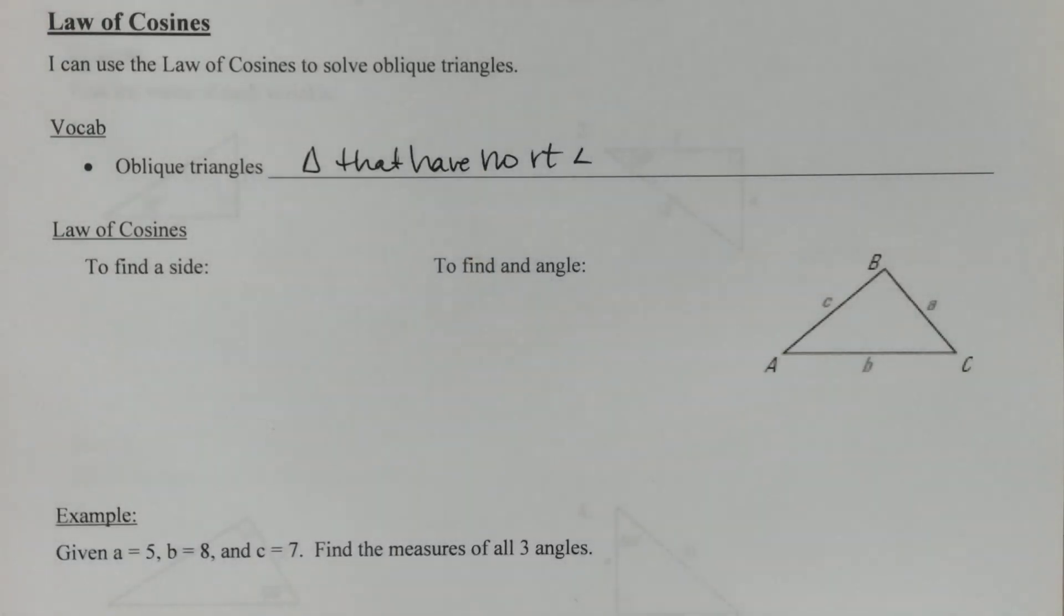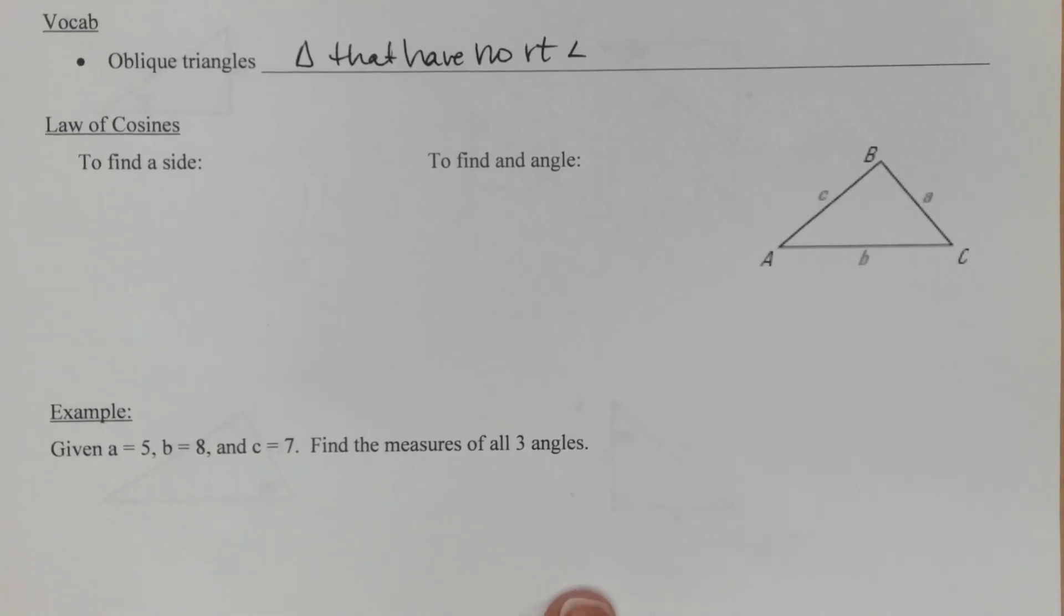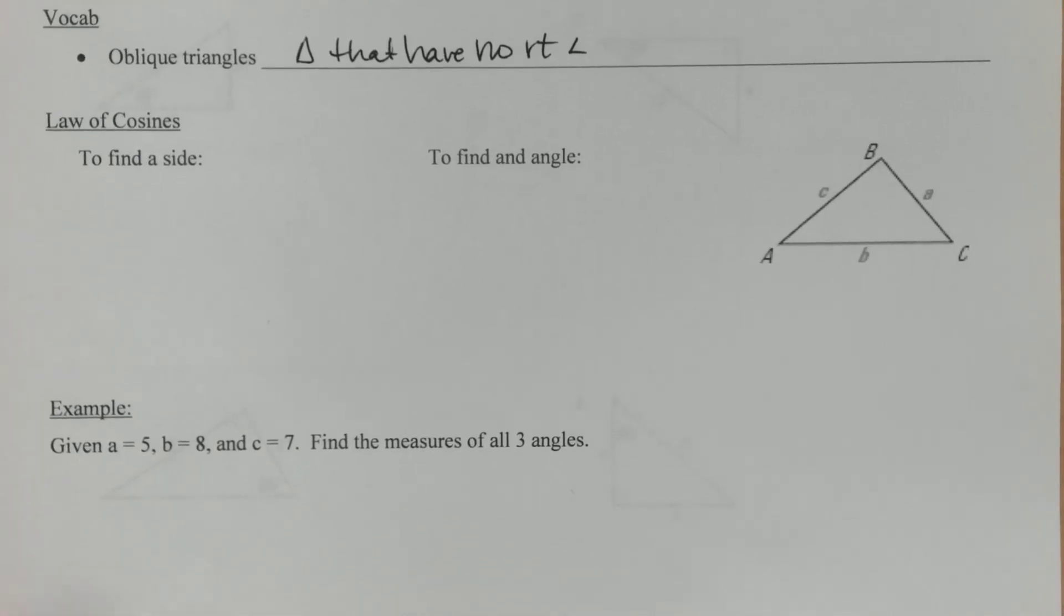Now if you had a right angle, then you could rely on your SOHCAHTOA knowledge - sine, cosine, tangent - and you could solve a triangle, you could find sides and angles. These are triangles that don't have a 90, so you cannot use SOHCAHTOA. Those only work in a right triangle.